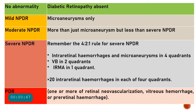Diabetic retinopathy is divided as follows: first, no abnormality where diabetic retinopathy is absent; then mild NPDR, moderate NPDR, severe NPDR, and PDR. Based upon the presence or absence of neovascularization, diabetic retinopathy is of two types: NPDR — non-proliferative diabetic retinopathy — and PDR — proliferative diabetic retinopathy — in which we have neovascularization. NPDR can be classified into mild, moderate, and severe, and PDR into low-risk and high-risk variety.